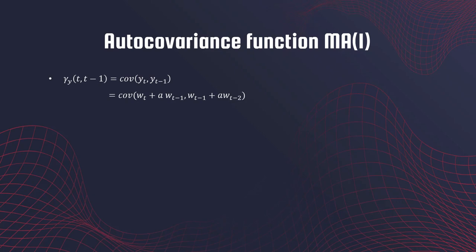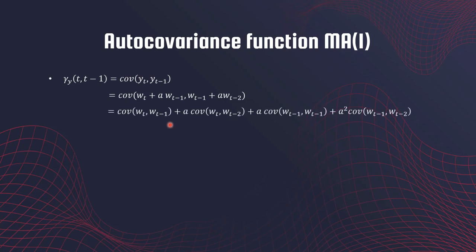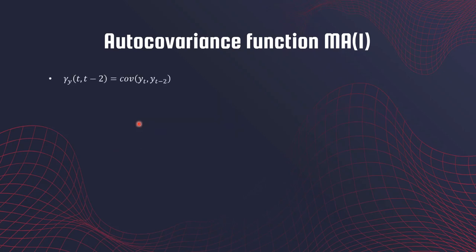When you open it up, these are the covariance terms you get. Most will be zero because distinct white noise data points are uncorrelated. You will only have one term that survives — the only nonzero term left — so what you get at the end is a times sigma squared.